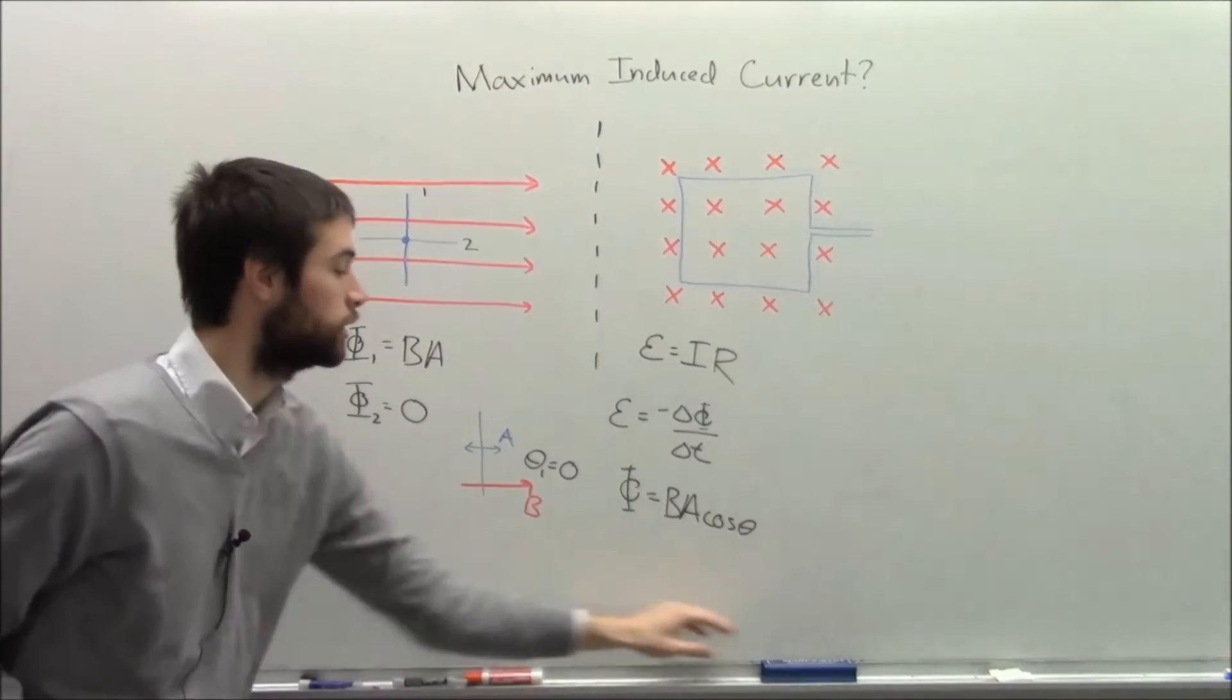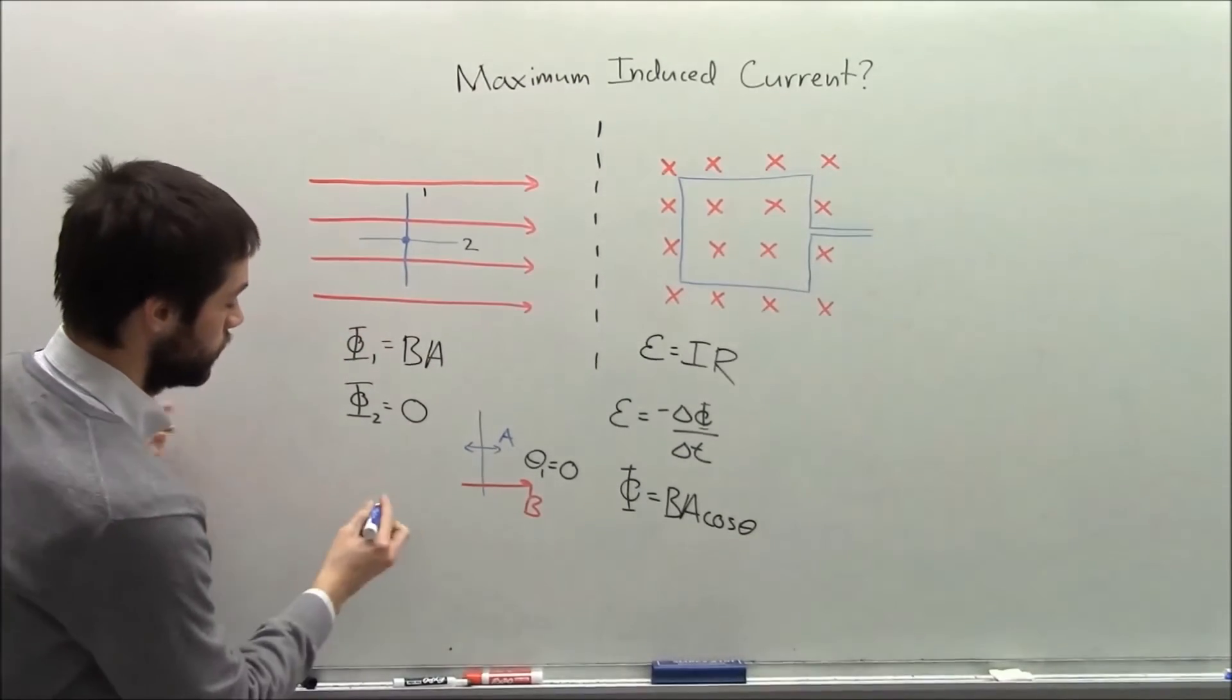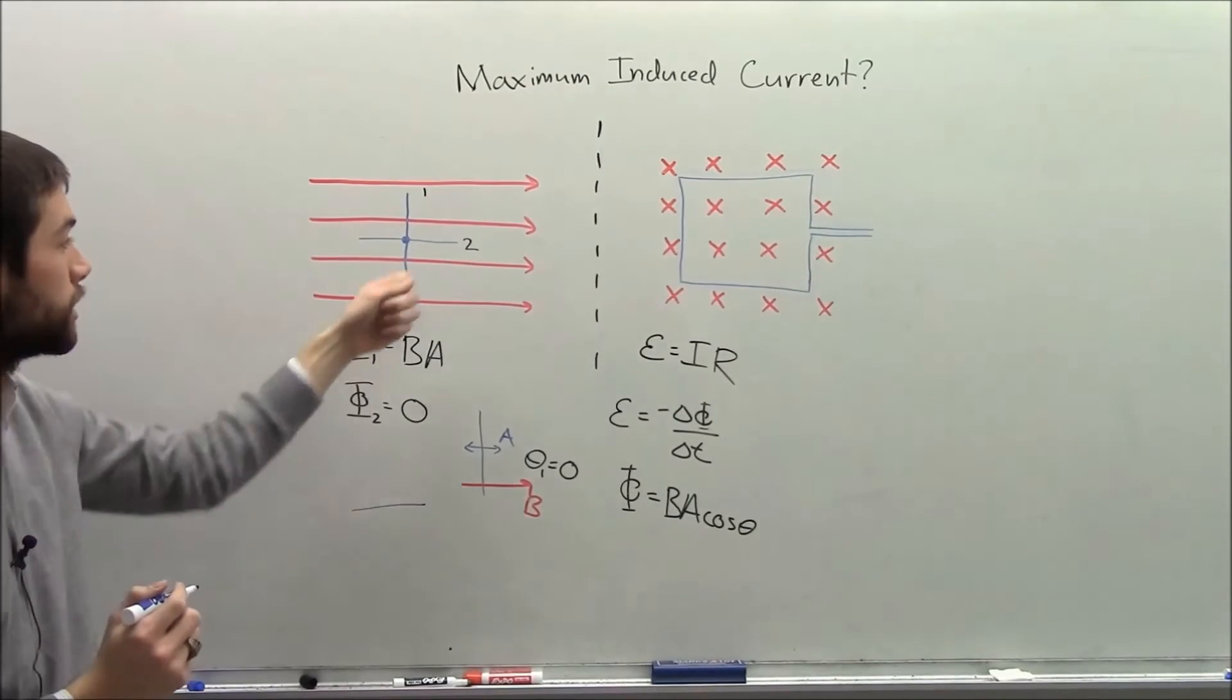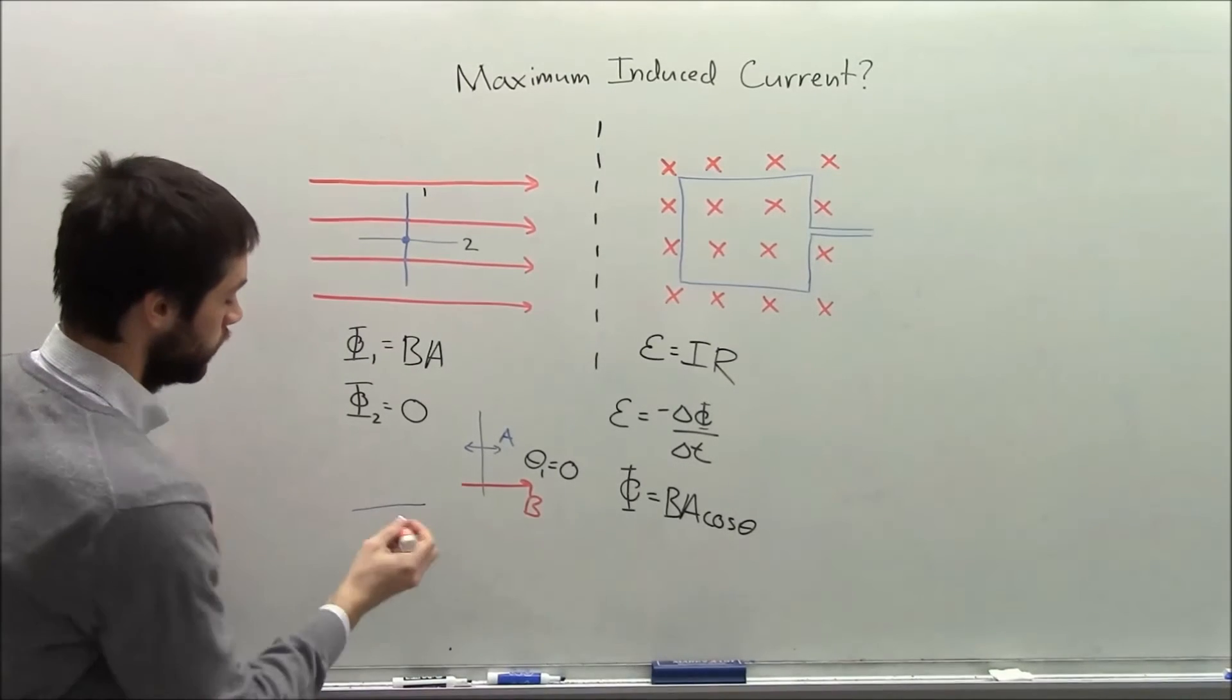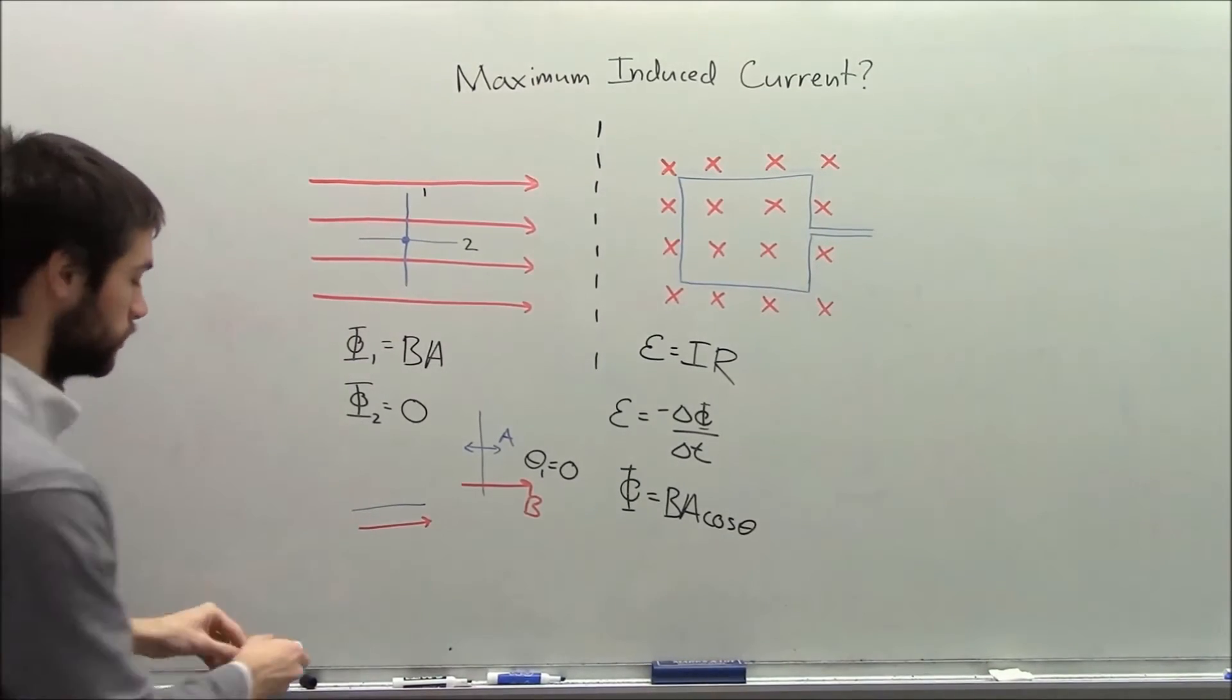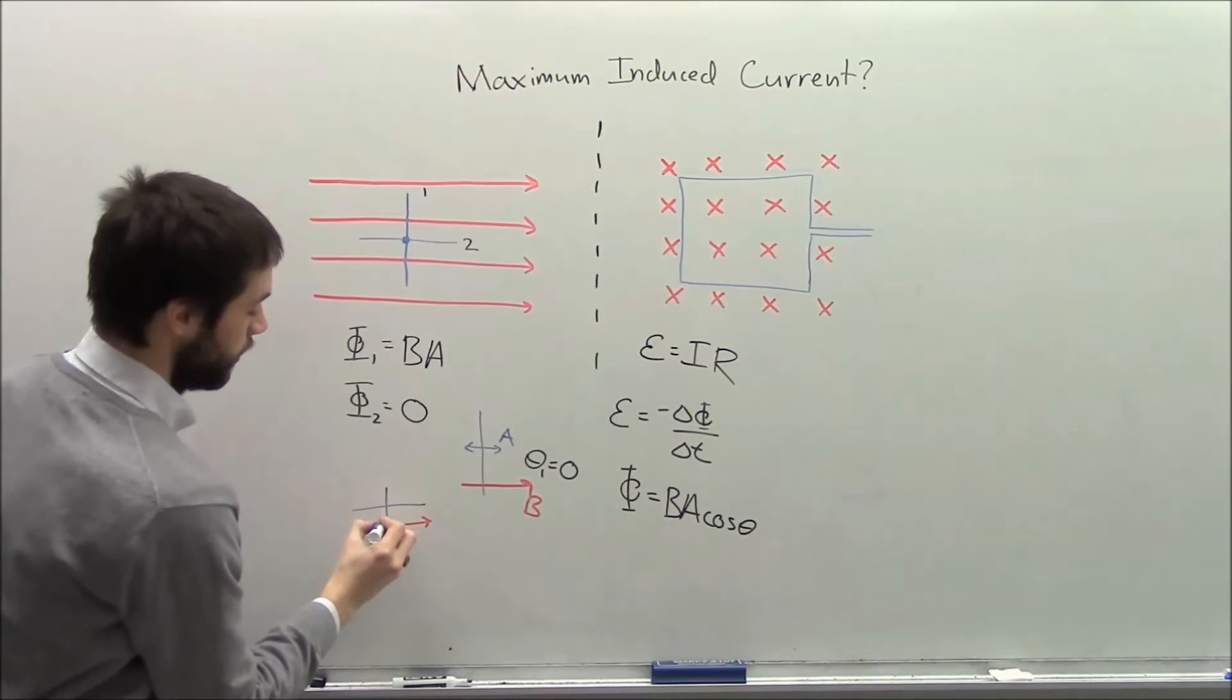So let's draw the other case. So here's my other case. Here's the area. Here's the loop now in position 2. Here's the field. Here's the area vector.